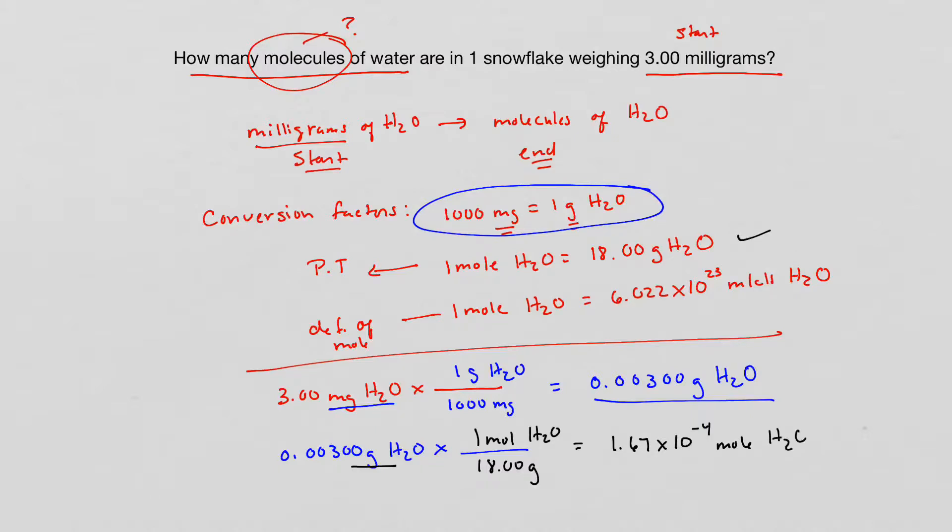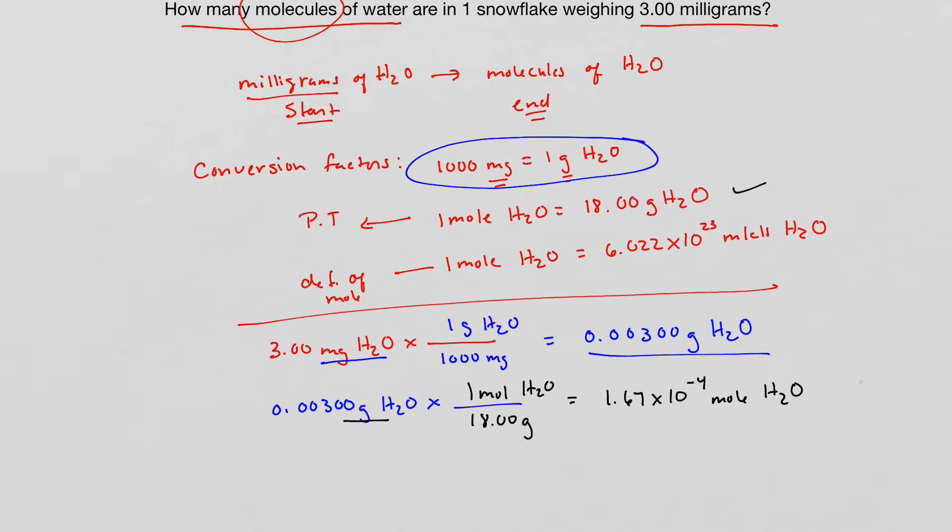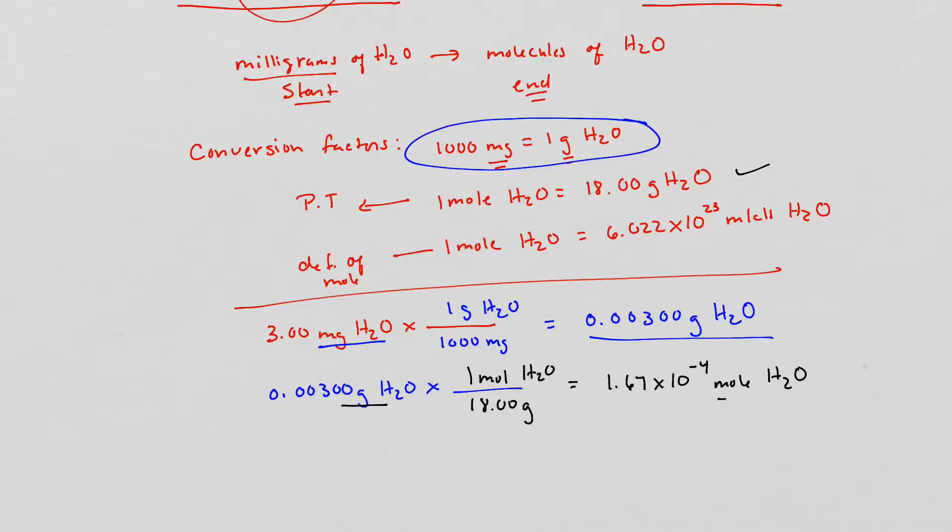Now typically you don't want to do your sig figs as you go, but we're going to do that. Don't tell on me. So now as I move this up, I'm in units of moles and that's not where I want to be. I want to figure out molecules. So this becomes my start point. I'm just going to bring 1.67 times 10 to the negative 4th moles of water down here.